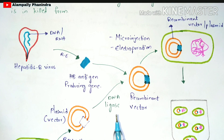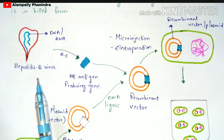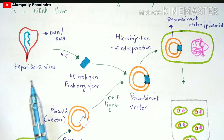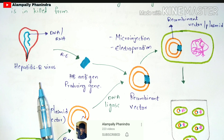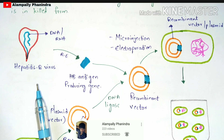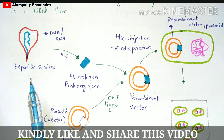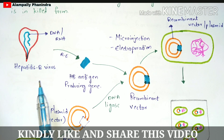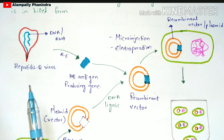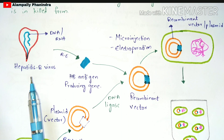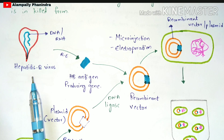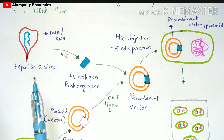Coming to the protocol: vaccines are mainly produced from the gene isolated from a virus. The virus chosen for this explanation is hepatitis B virus, which can be extracted from a patient suffering with hepatitis. The vaccine produced from hepatitis B virus is called the hepatitis B vaccine. Similarly, any virus chosen will produce that particular type of vaccine.